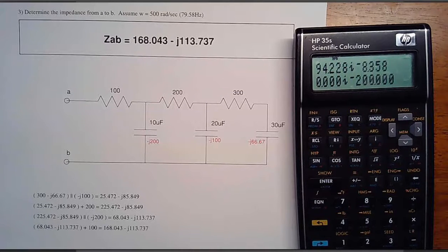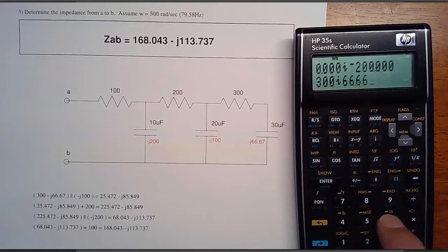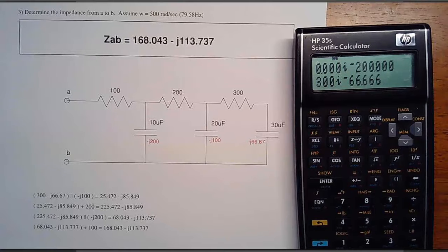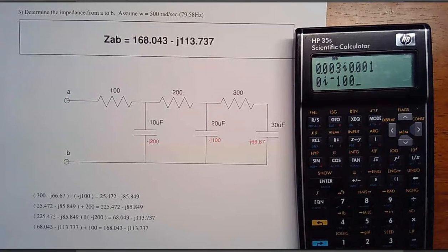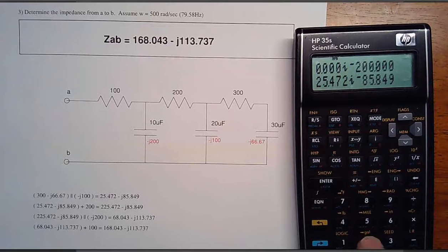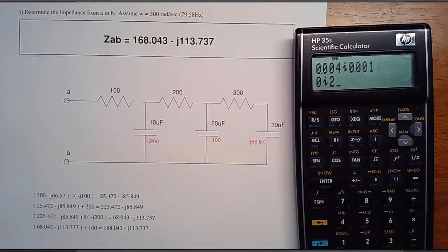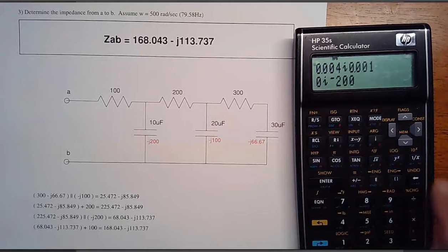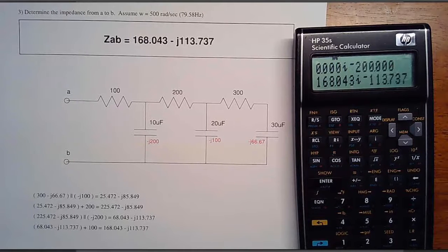Now to find the total impedance, I've got 300 minus J66.66. That's in parallel with minus J100, so 1 over R1, minus J100, inverse. Gives you 25 minus J85 ohms, in series with 200. Now in parallel with minus J200, 1 over R1, 1 over R2, add them, plus 100 ohms. So that's the net impedance, 168.043 minus J113.